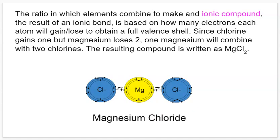The ratio in which elements combine to make ionic compounds is based on how many electrons they have in their valence shell and how many they need to get a full valence shell. Consider the example of magnesium and chlorine: magnesium, unlike sodium, has two valence electrons. You'd either have to gain six or lose two, and it's far more likely to lose two. So magnesium is going to give up two electrons. Since chlorine can only gain one, magnesium has to interact with two different chlorine atoms.